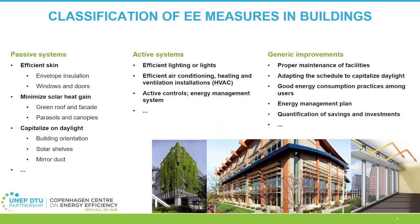Moving into active systems, some examples are efficient lighting, efficient HVAC systems — that is, heating, ventilation, and air conditioning systems — heating controls, and smart energy management. When it comes to generic improvements, some examples are proper maintenance of the facilities, adapting the use schedule to capitalize on daylight, good energy consumption practices among employees or users of the building, an energy management plan, and quantification of savings and investments on any energy efficiency measure undertaken, among others.